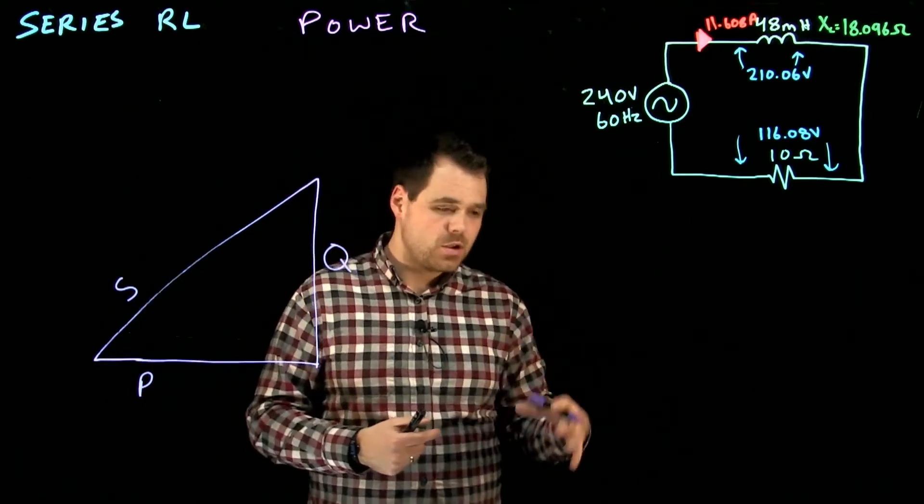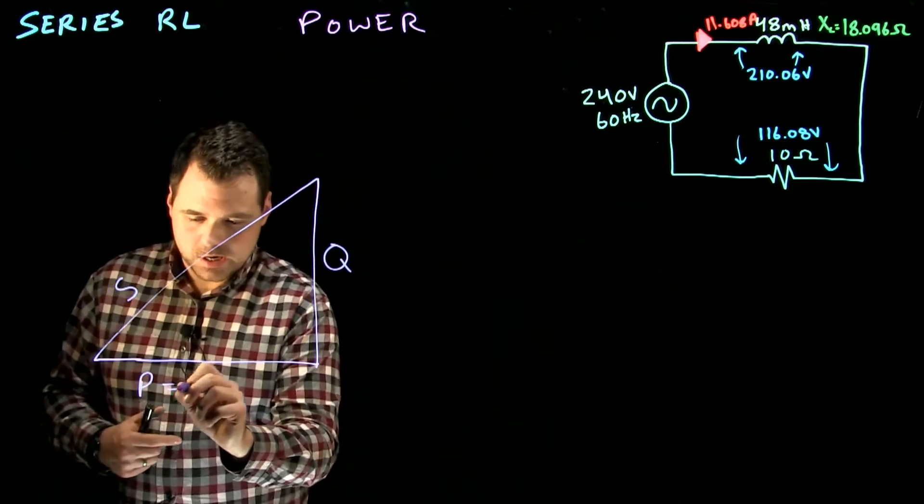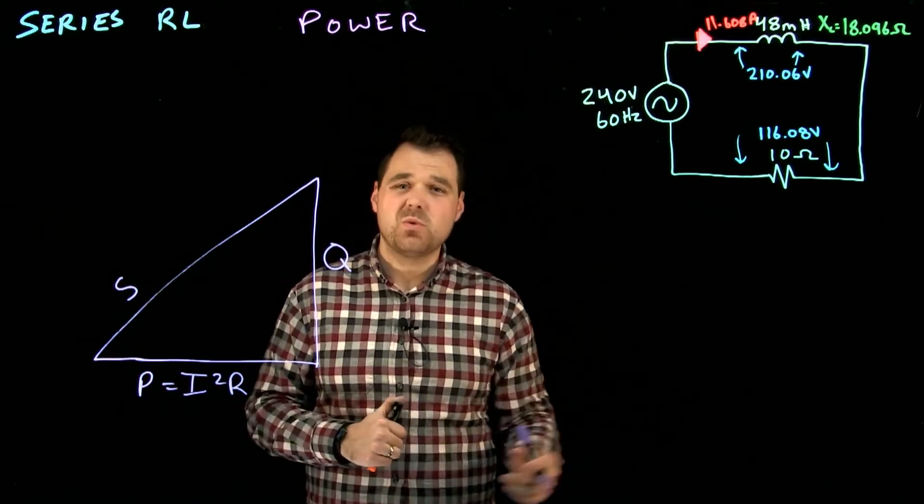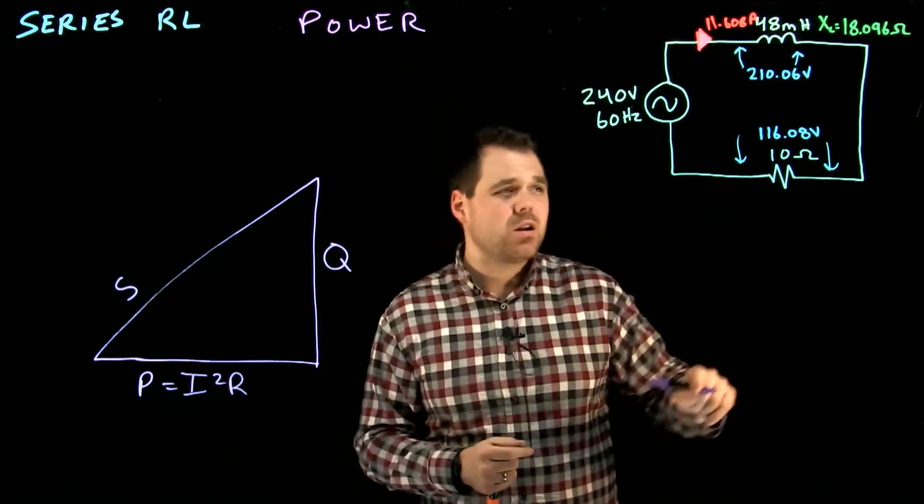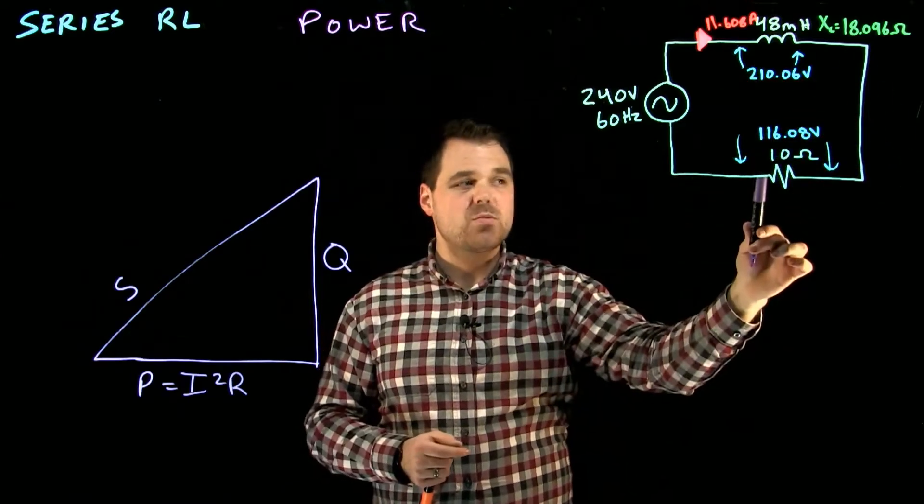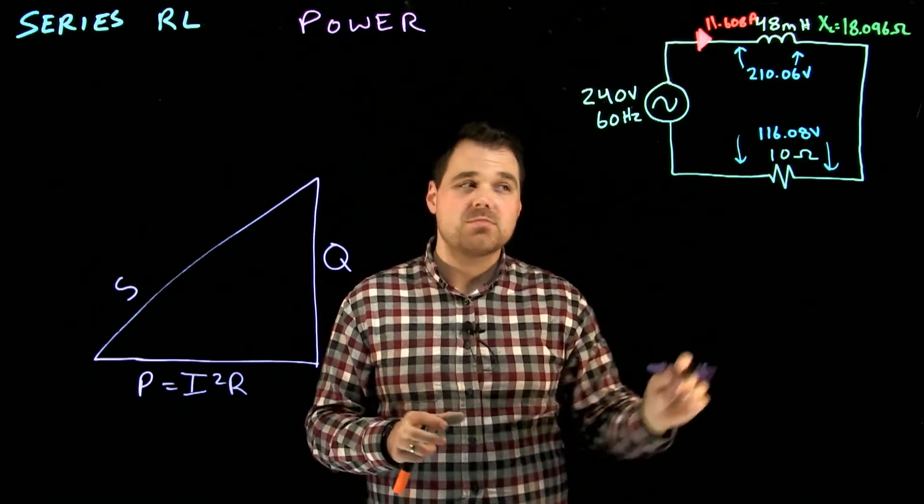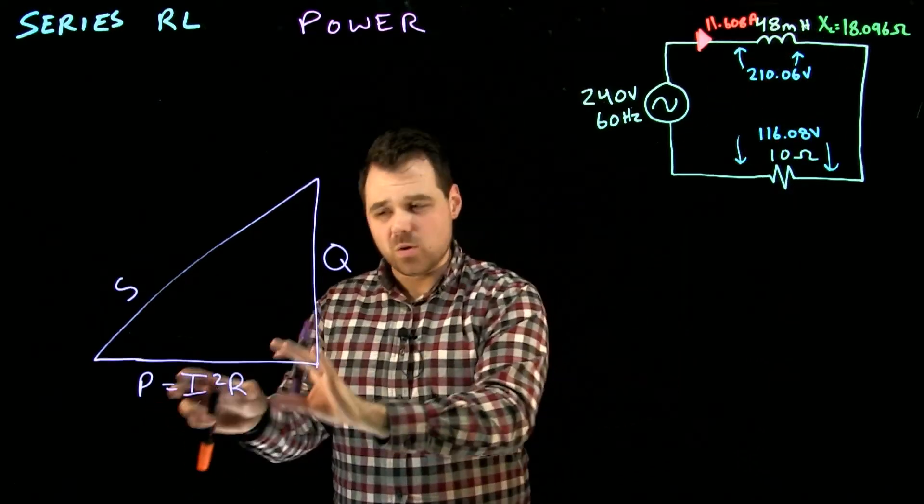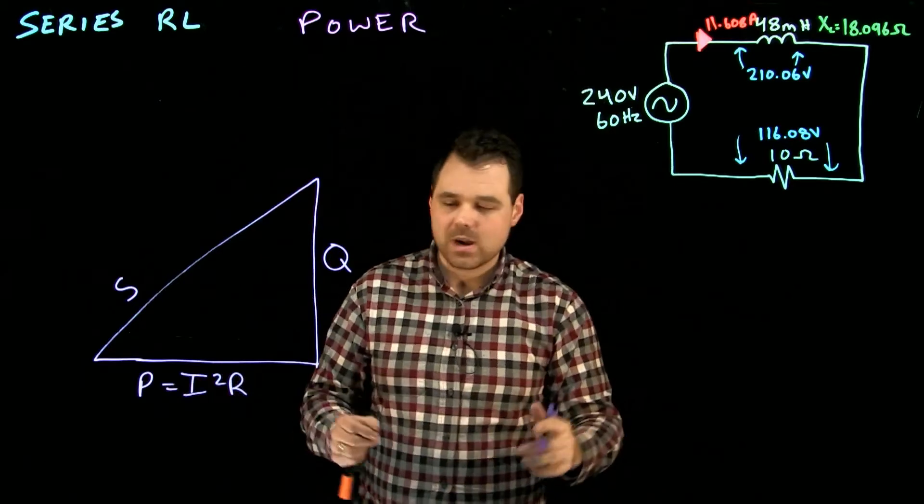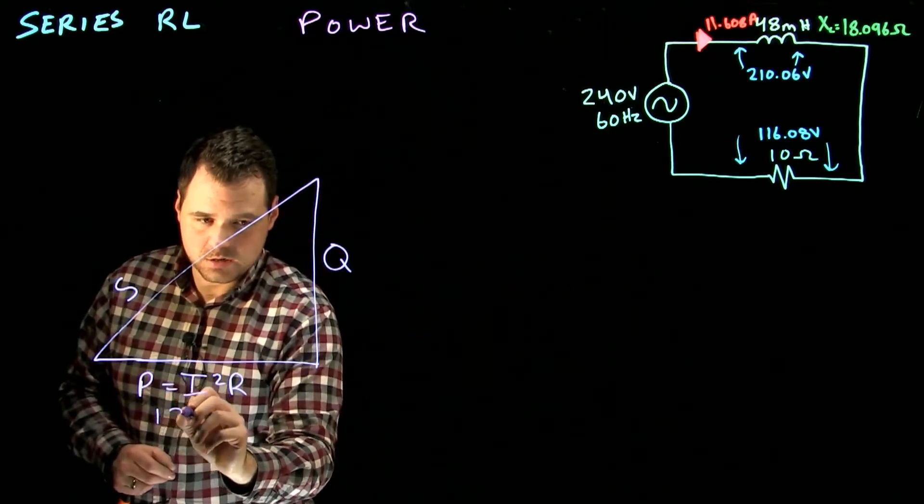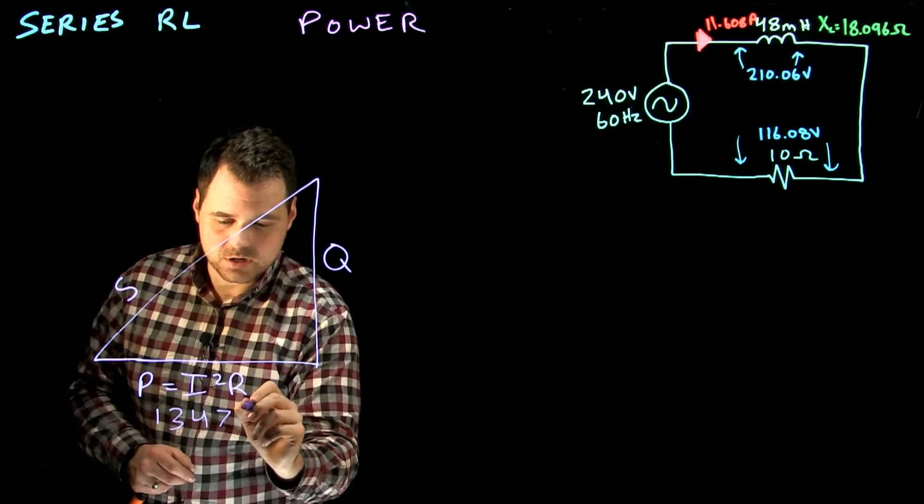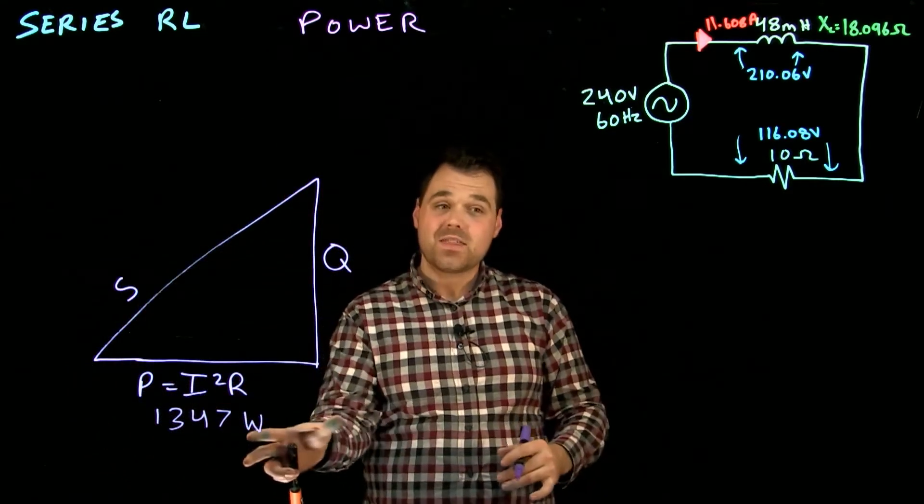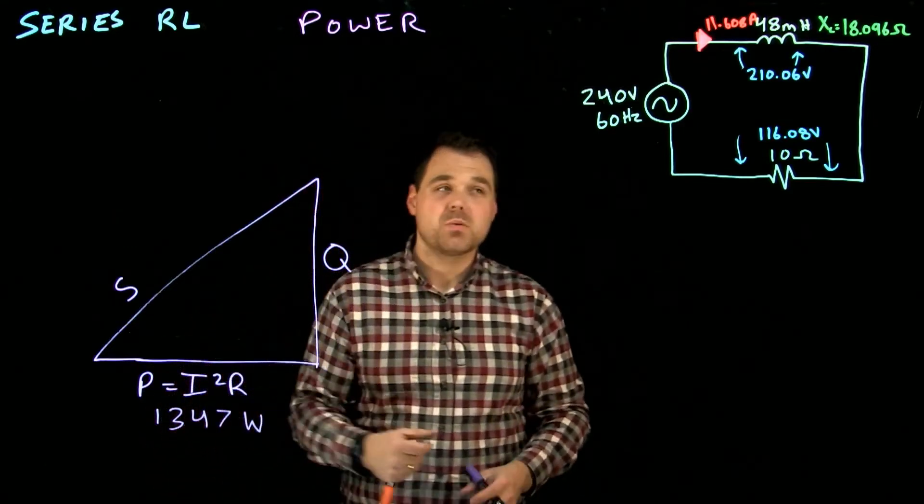What I like to do is I like to say okay P equals I squared times R. That's what I want to do. This is the work being done. The real power. I'm going to use my current squared times my resistance and I have to make sure I'm using my resistance because inductive reactance doesn't give me true power. It only comes from that R or that resistance. So I get 1347 watts. Now there are a couple other ways I can get that true power. This is the one I like. I squared times R.